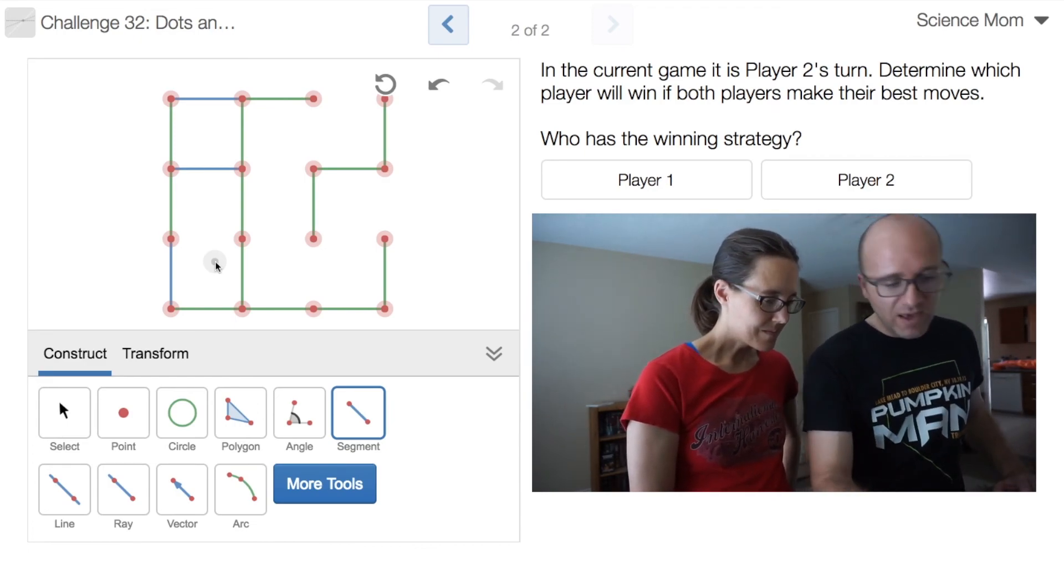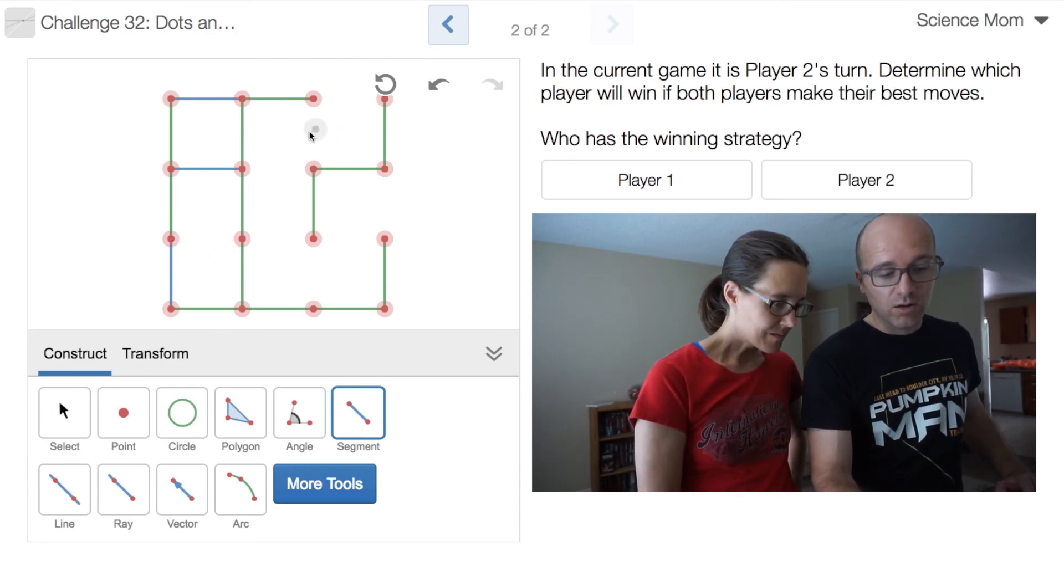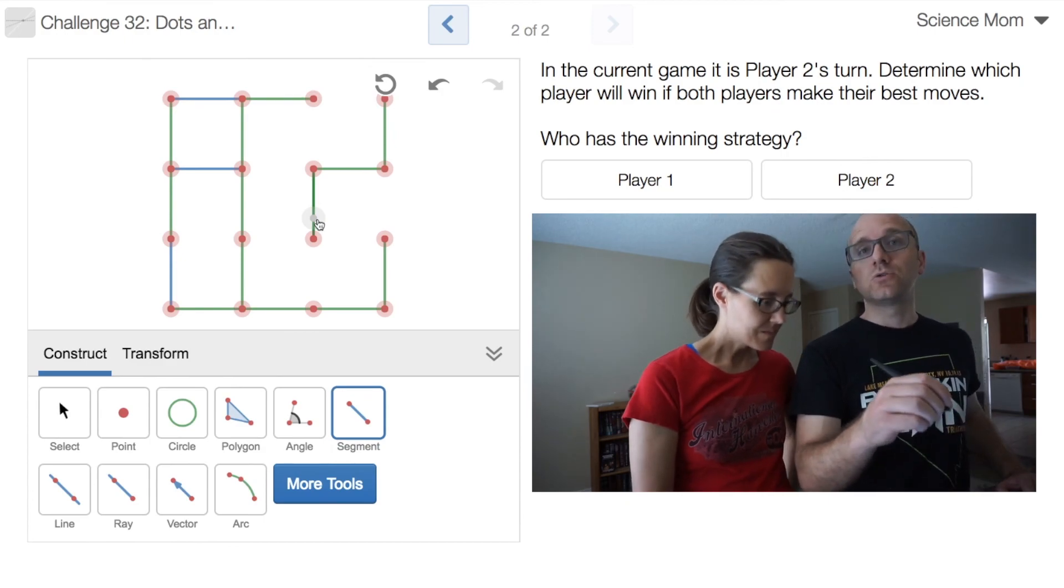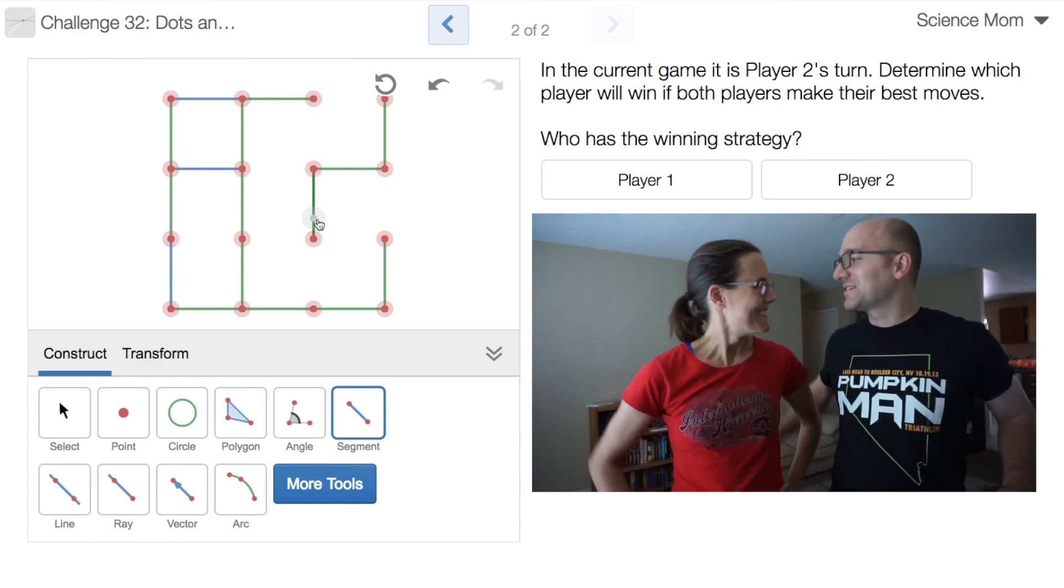But now player two, at best, player two can put a line here and get two boxes, but player one is going to get all of the boxes over here as soon as player two draws a single line in that sector. Cool. Well done, Science Mom. That was fun.